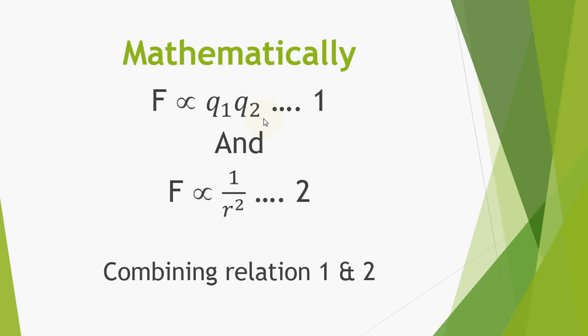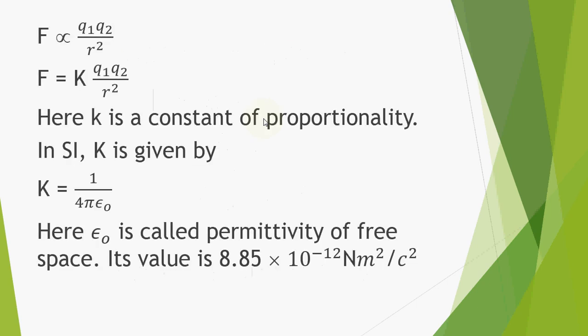So if we combine relation number 1 and relation number 2, we get F is directly proportional to q₁q₂ over r². F is equal to k q₁q₂ over r². In this equation we have replaced the proportionality sign with the equality sign and with the constant k.